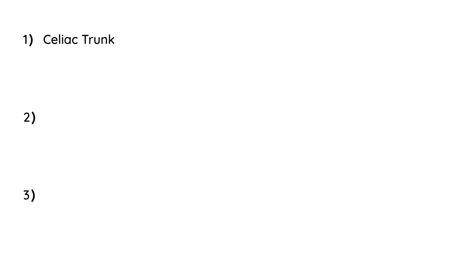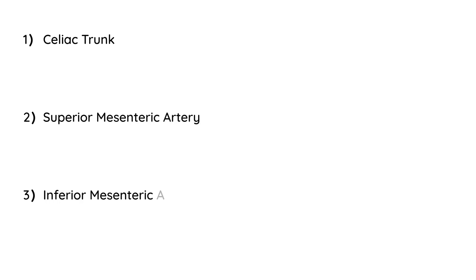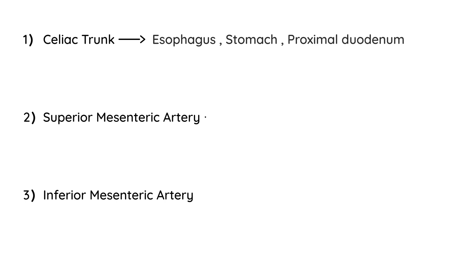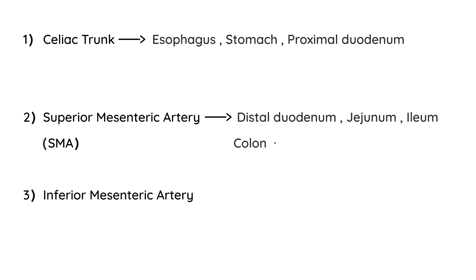In the mesentery there are three main vessels: the celiac trunk, the superior mesenteric artery, and the inferior mesenteric artery. These three are the big players in supplying blood to the intestine. The celiac trunk supplies blood to the esophagus, stomach, and proximal duodenum. The superior mesenteric artery, or SMA, supplies the distal duodenum, the ileum, and the large intestine all the way up to the splenic flexure.